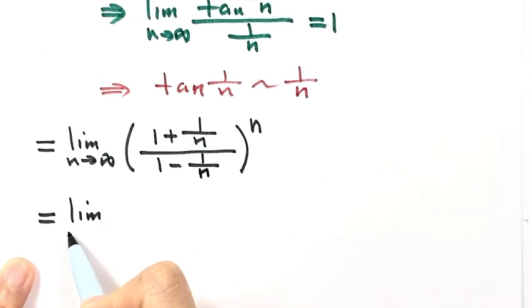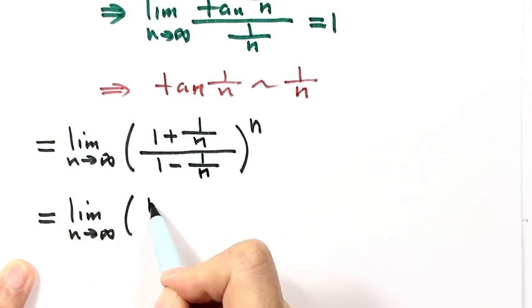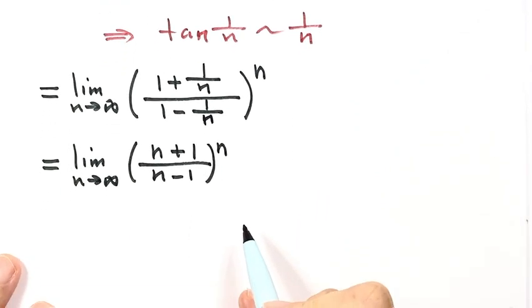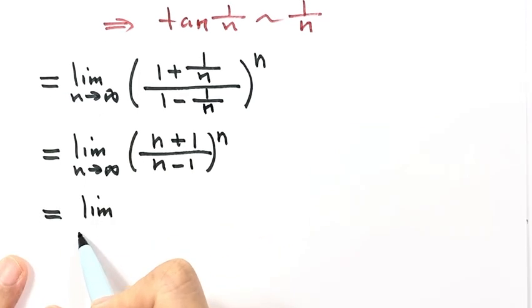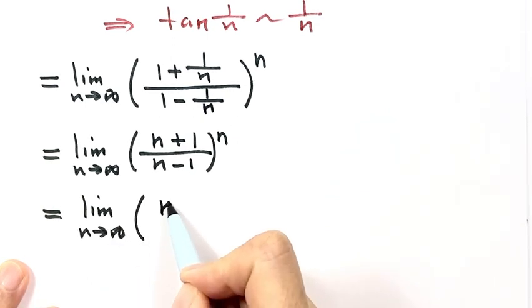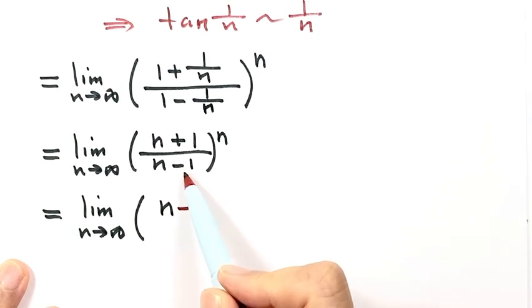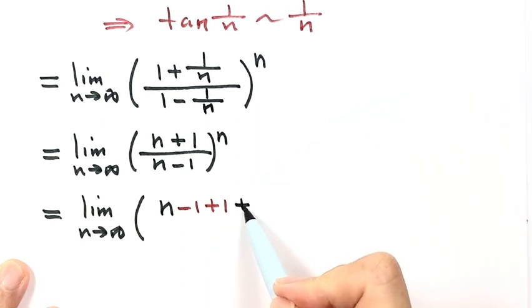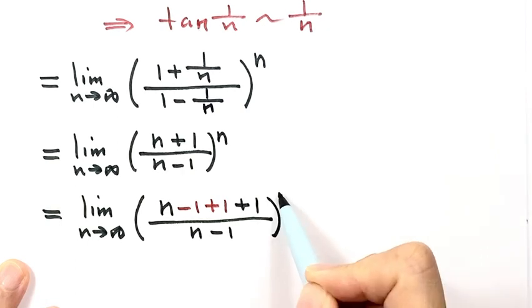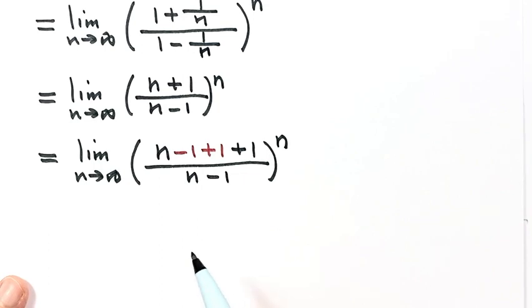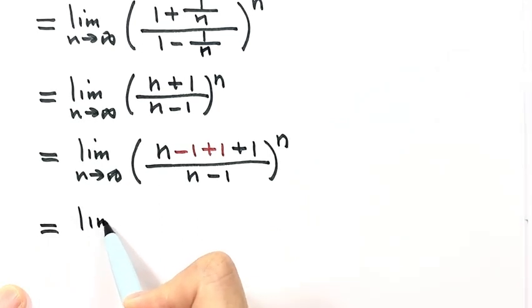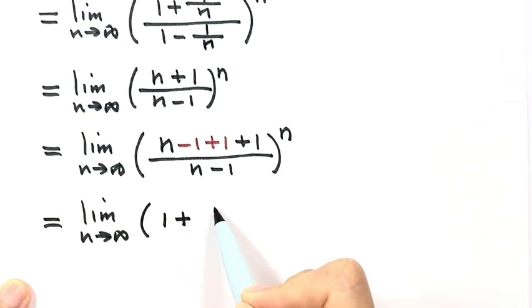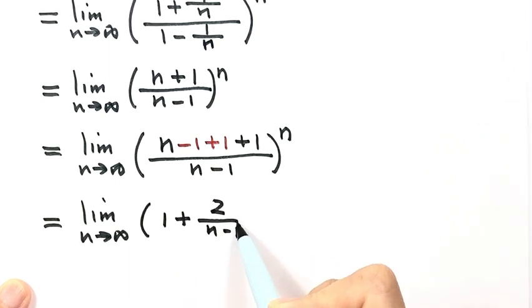Now let's multiply both top and bottom by n. So the numerator becomes n plus 1 and the denominator becomes n minus 1. Rewriting the inside part, we can separate this into 1 plus 2 over (n minus 1), raised to the power of n.